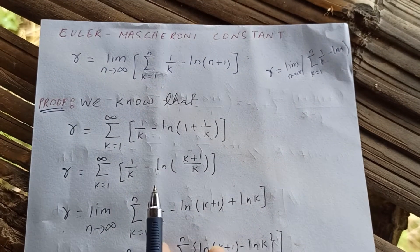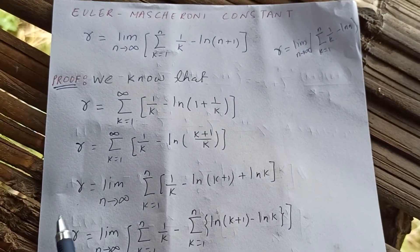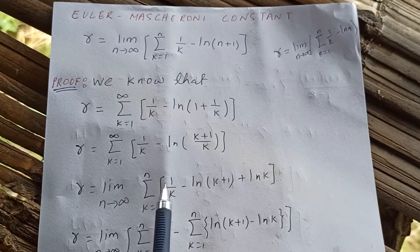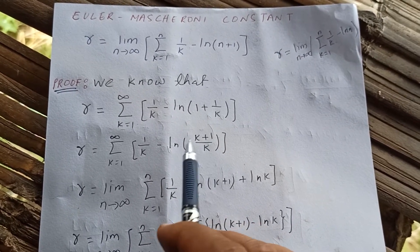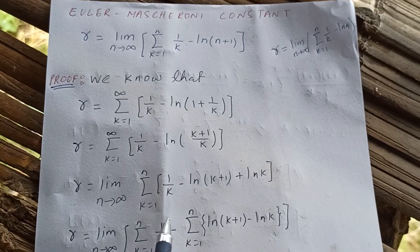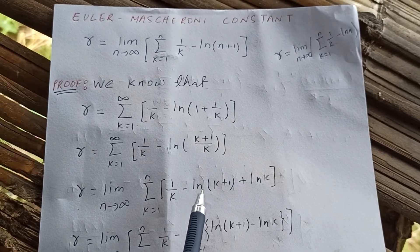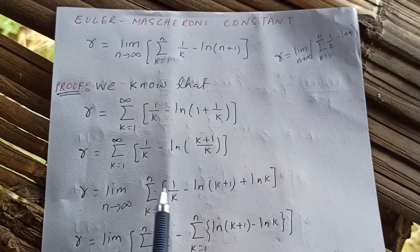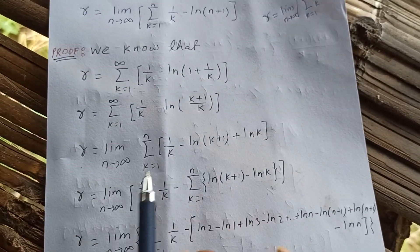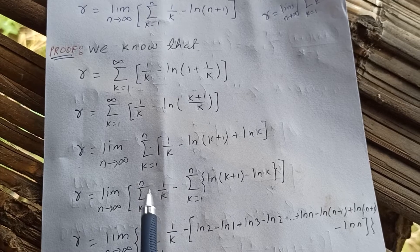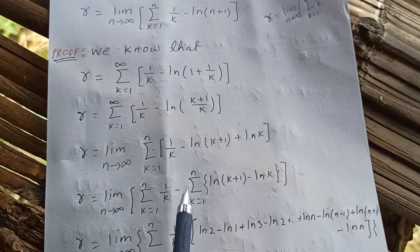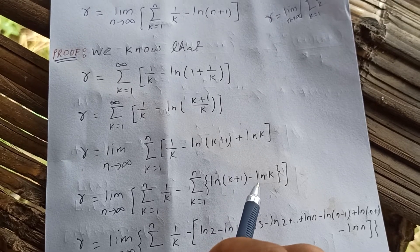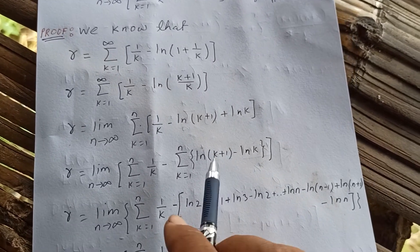Now let's take the limit out. So the Euler-Mascheroni constant equals the limit as n approaches infinity of the sum from k equals one to n of one over k minus, using logarithm properties, natural log of k plus one minus natural log of k. Now taking the sum separately: limit as n approaches infinity of the sum from k equals one to n of one over k, minus the sum from k equals one to n of natural log of k plus one minus natural log of k.